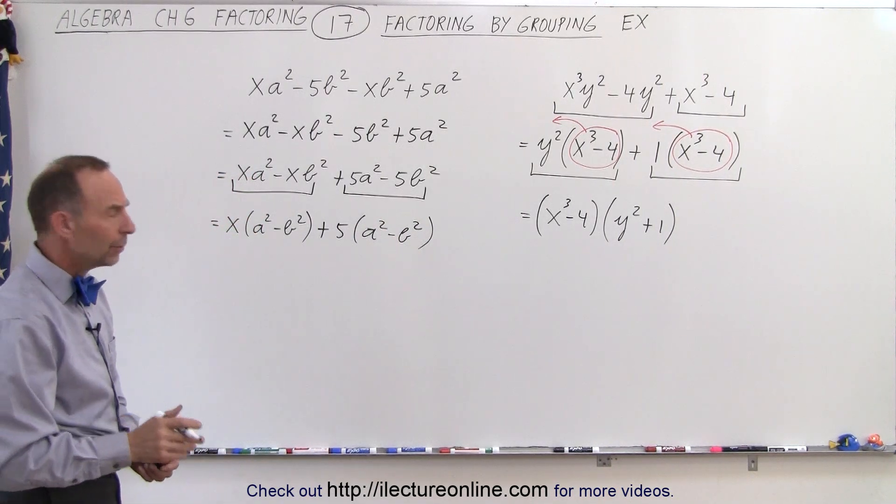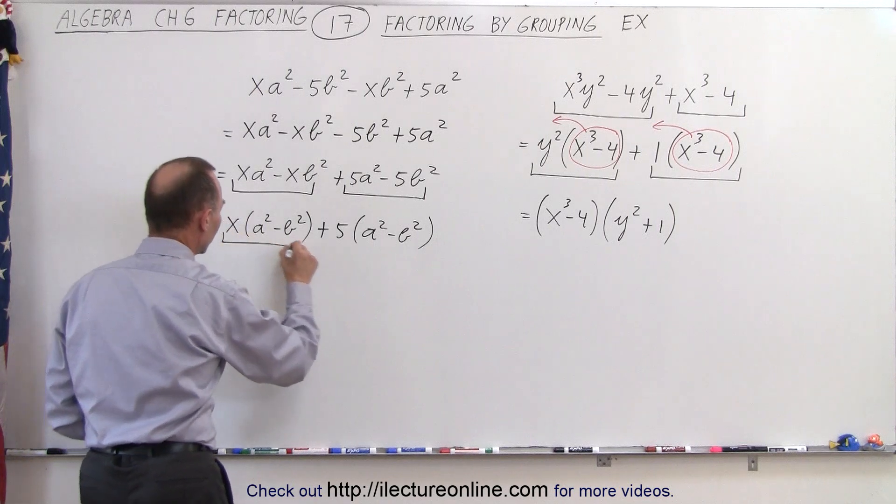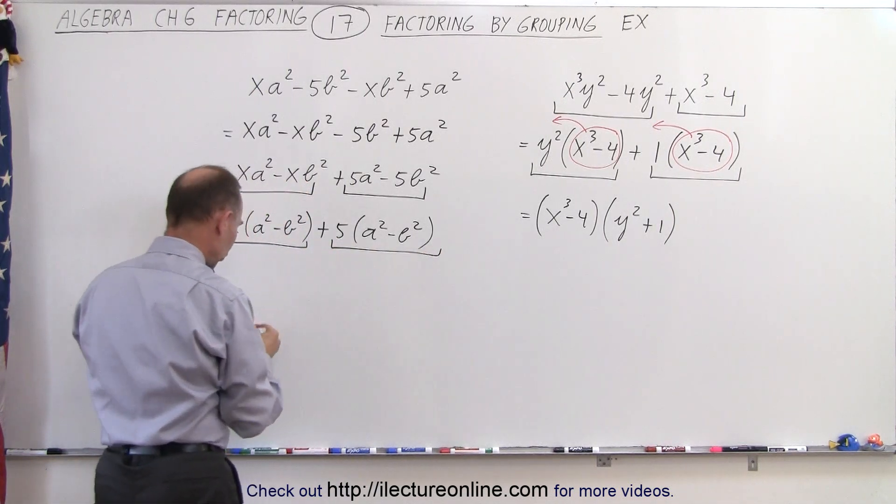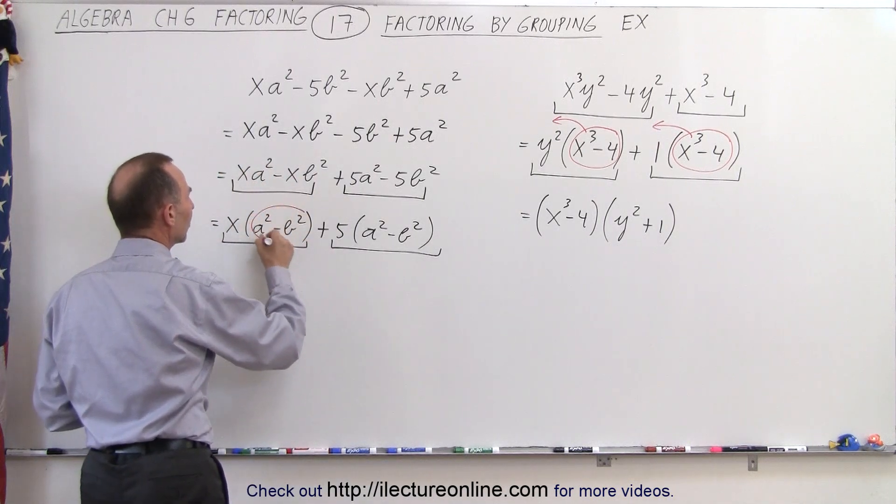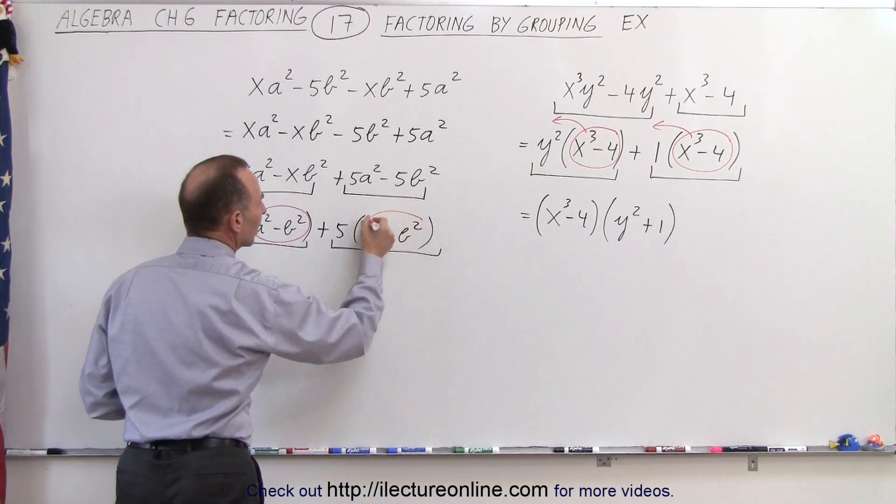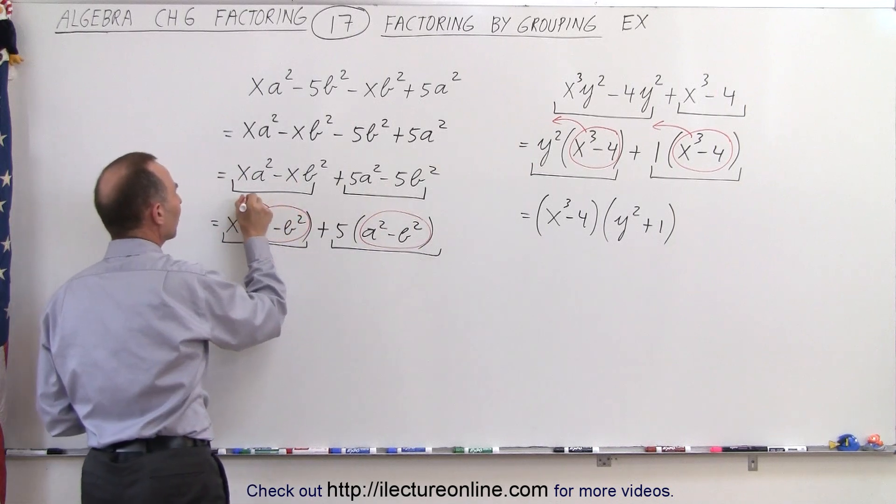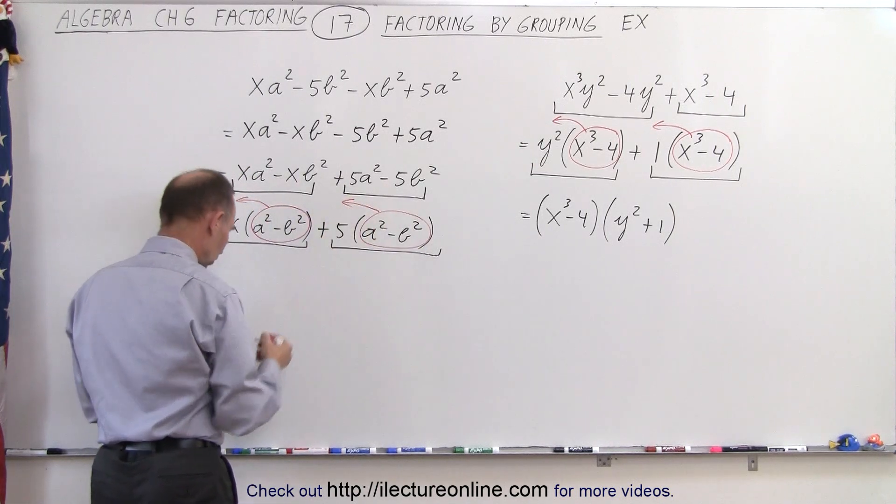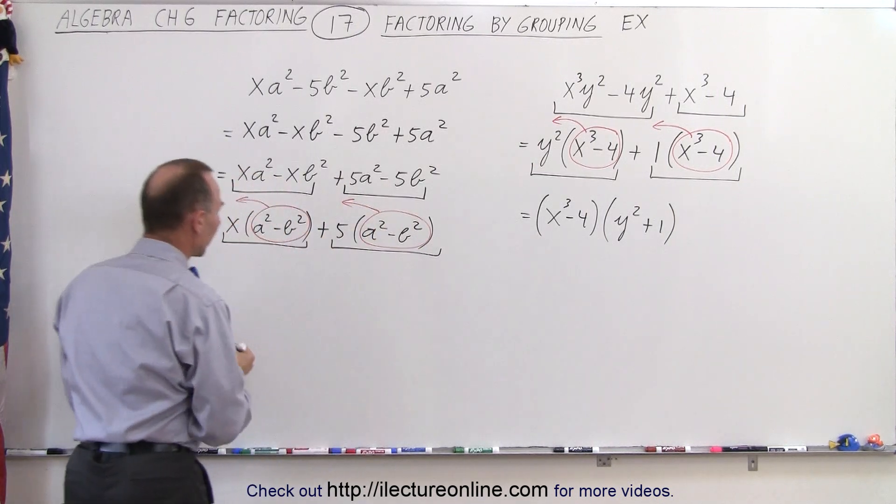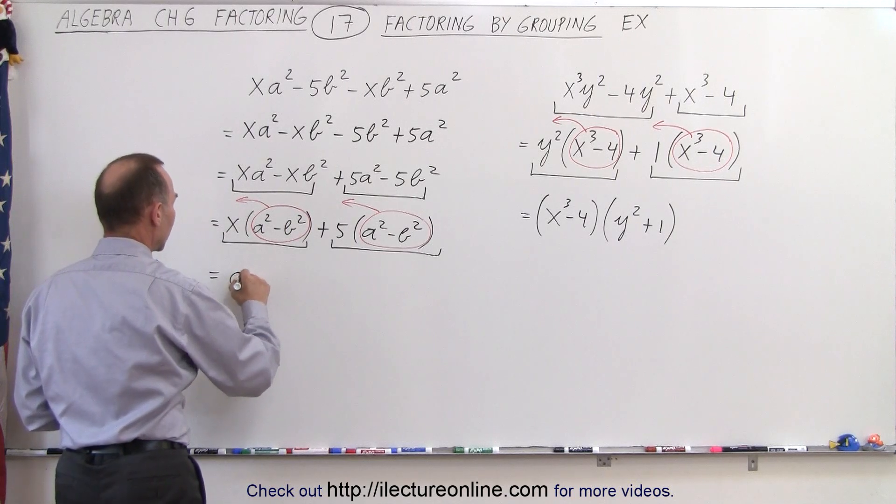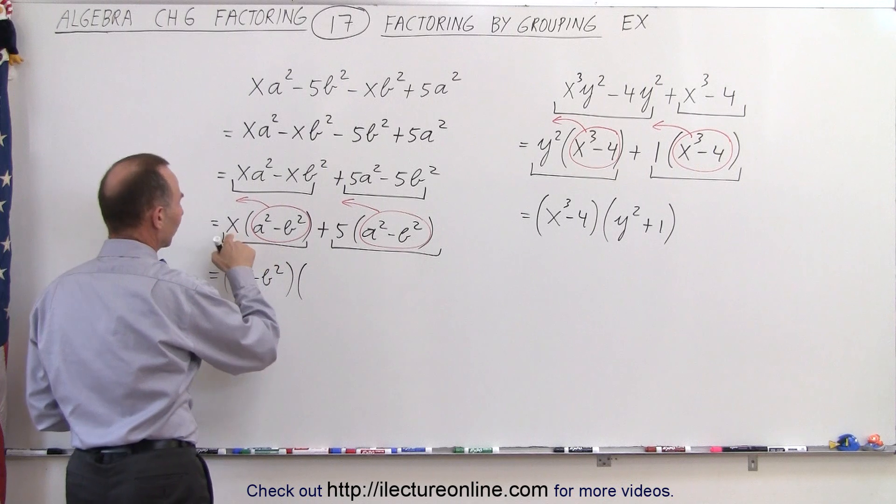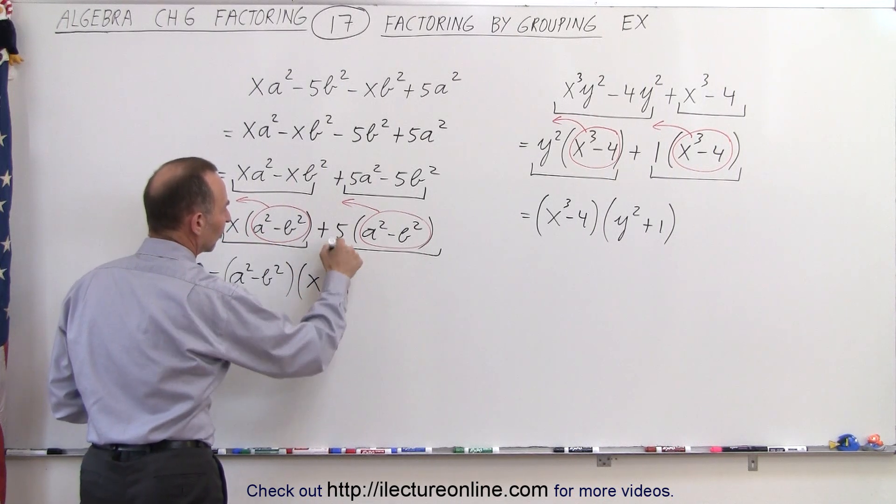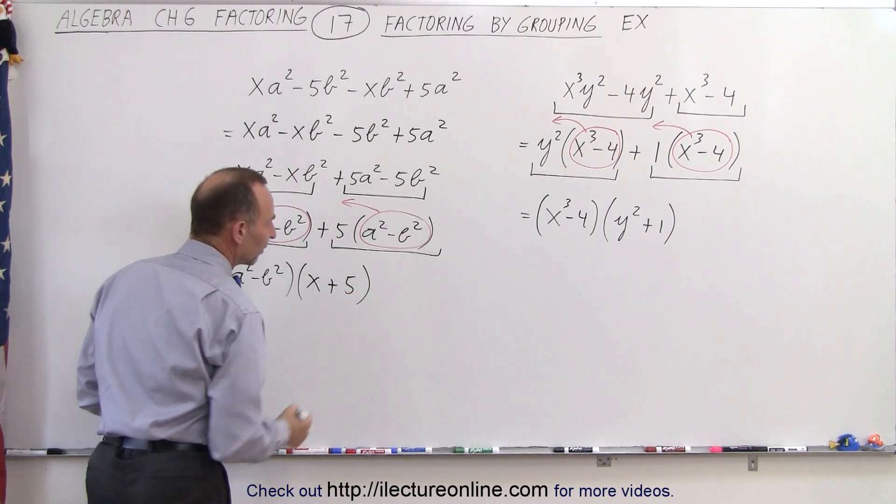All right, now when I take a look at that, I have one term plus another term, and each of these two terms has a common factor. The common factor is a-square minus b-square, so we can factor those out of each of the two terms. When we do that, we get a-square minus b-square times what's left: the first term has an x in it, plus the second term has a five in it.